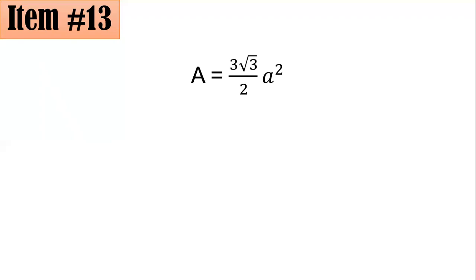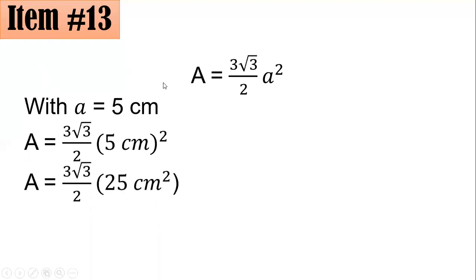And the shortcut in taking the area of a regular hexagon is equal to 3 square root of 3 all over 2 times the square of 5 cm, which is 25 cm squared. So multiplying them, 3 times 25 gives you 75, and the rest were just copied. So we have the area of this regular hexagon as 75 square root of 3 all over 2 cm squared, letter C.